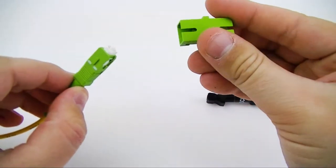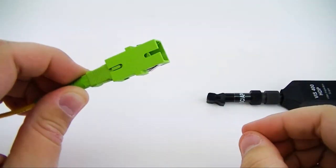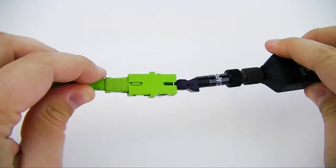The fiber to be tested is inserted into one side of the simplex adapter, and the inspection scope with the SC-APC tip is inserted into the other side.